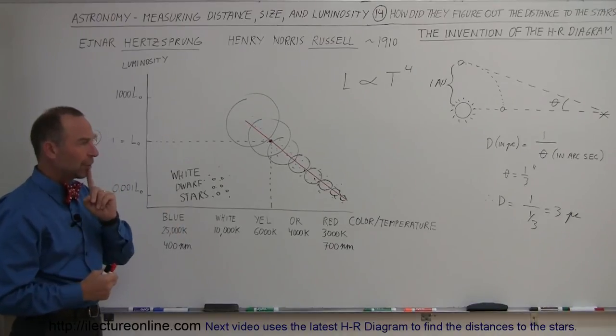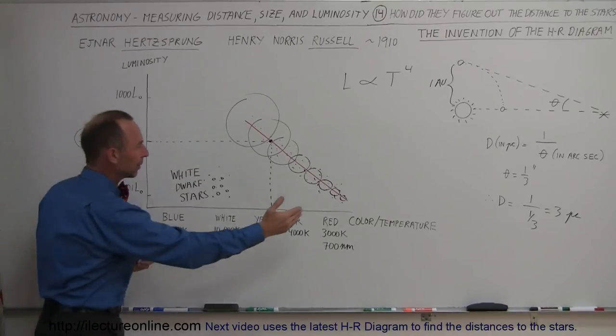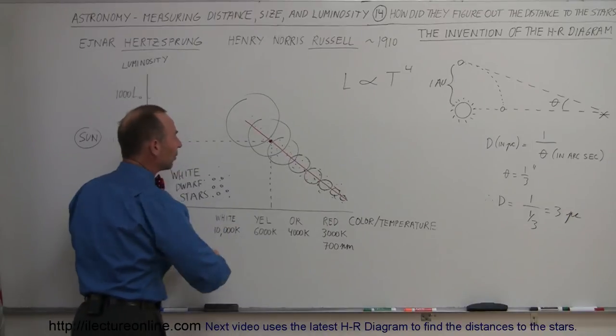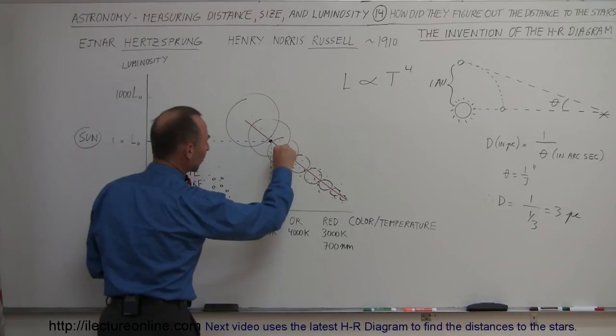However, if we say, wait a minute, if we can take a look at that star and we can measure the color of that star, we can then place it somewhere on this diagram. And so let's say that we ended up with indicating that it was somewhere between the orange and the yellow star, and say okay, it must be right there.